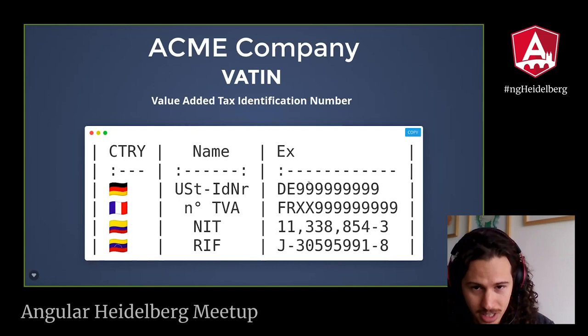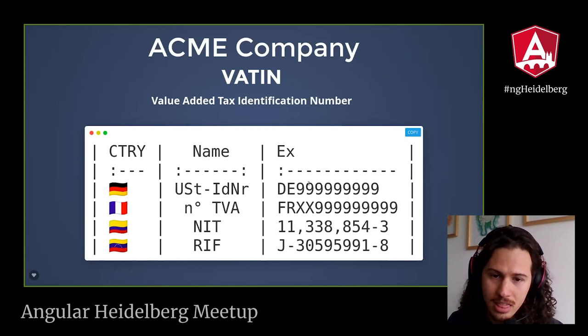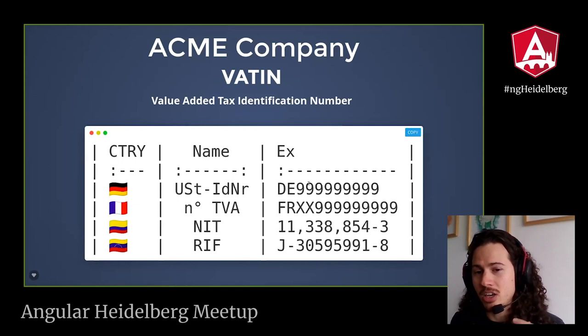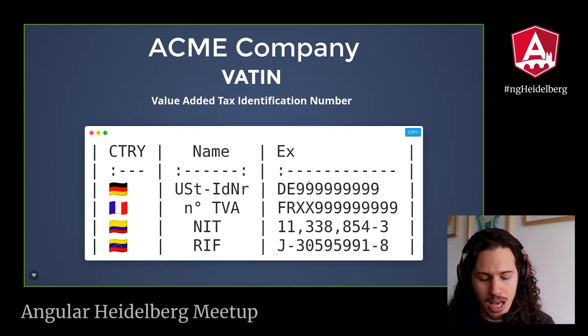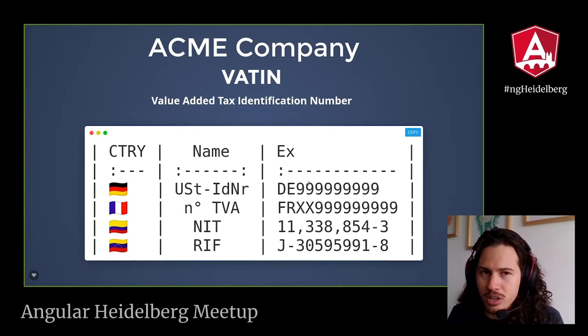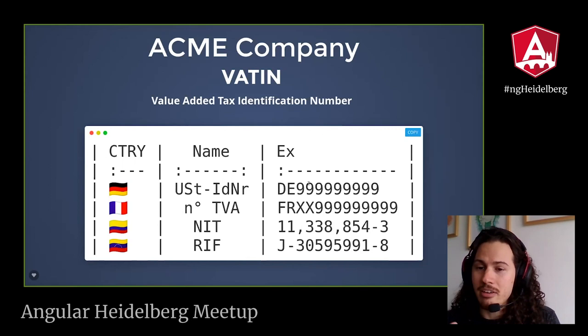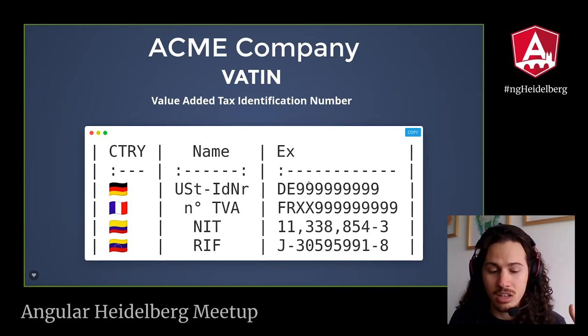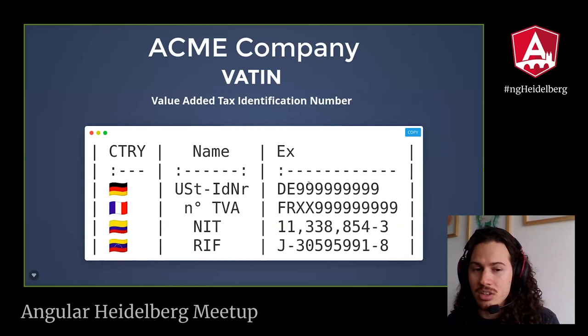But we have a challenge, my dear co-founders. Each country manages that business number differently. For example, in Germany it has one format, but in Colombia it has a different format — and you can see they are very different. And to validate that number it is not that simple. Sometimes you need to run an algorithm to know if the number is valid or not. For example, in Colombia you need to run the algorithm, which returns a number that needs to equal the last digit.